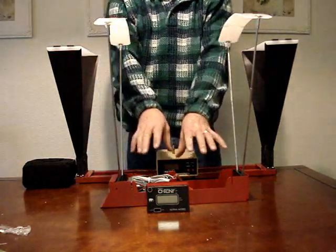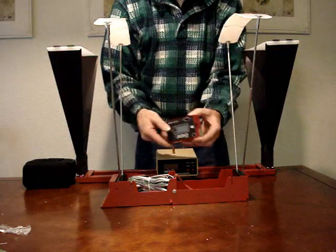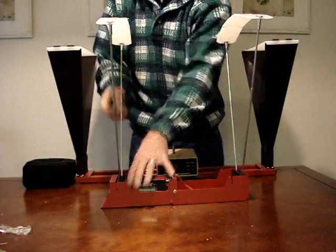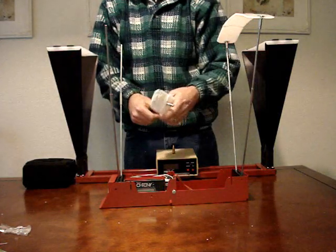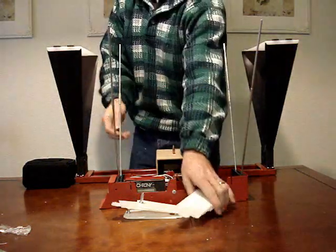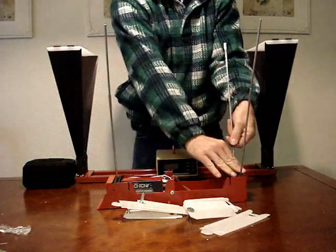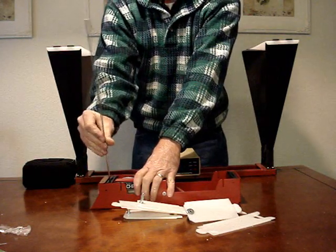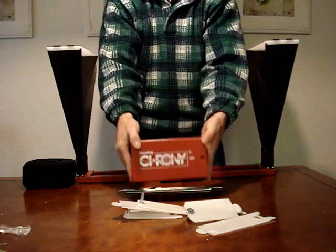The nice thing about the Chrony is it all packs up in this little guy here. The computer fits inside and it uses a 9-volt battery. When you take your sky screens off, they go into the box. And these guys break down like this. These rods come out, they come apart, and this whole thing folds up. You're ready to go.